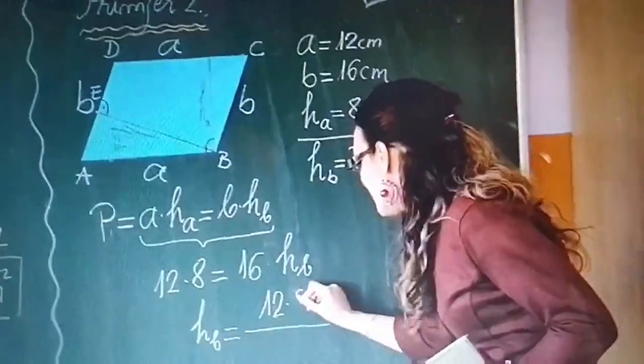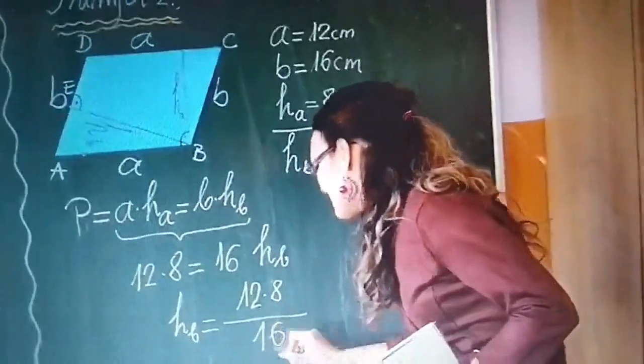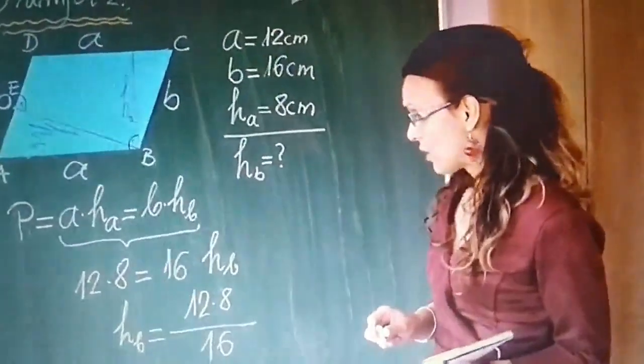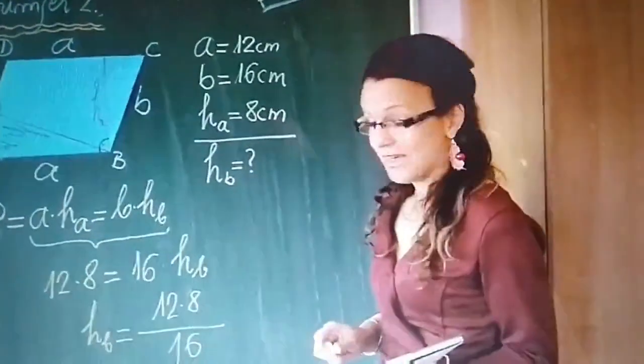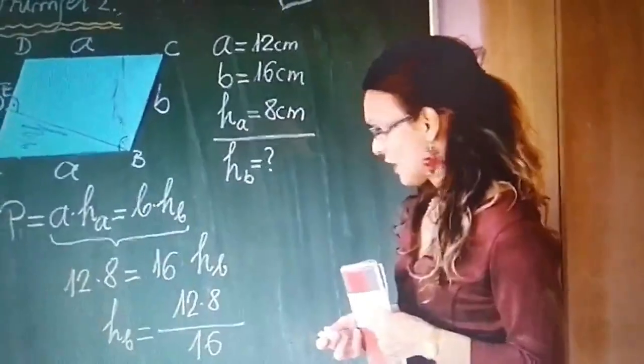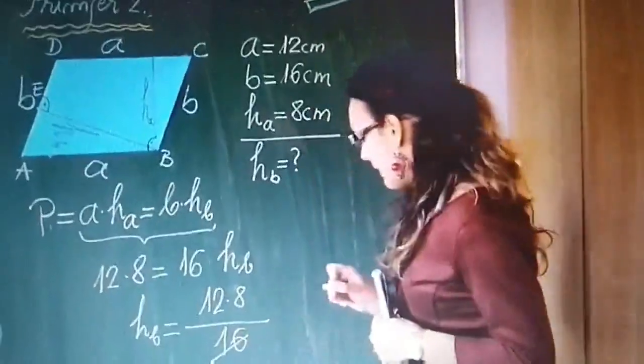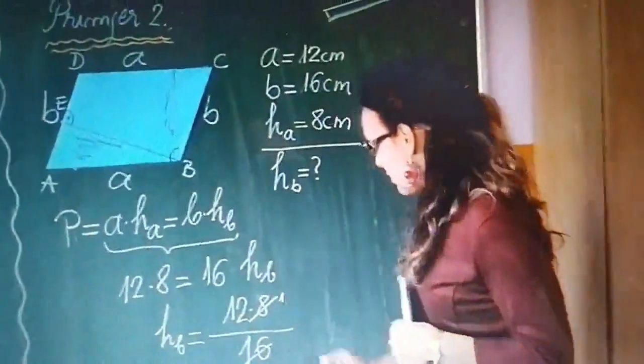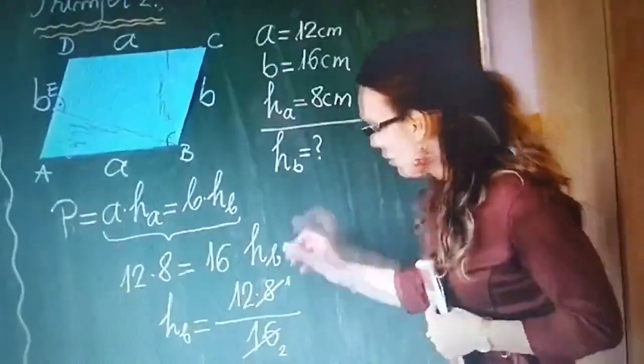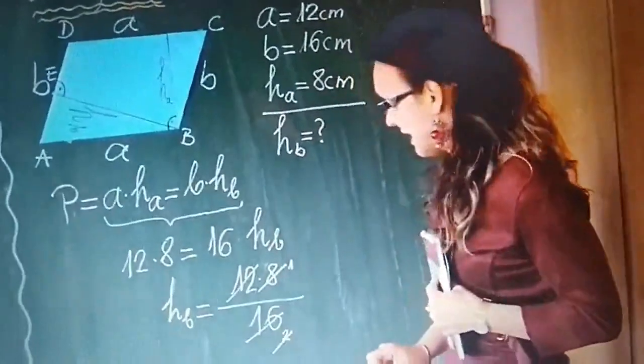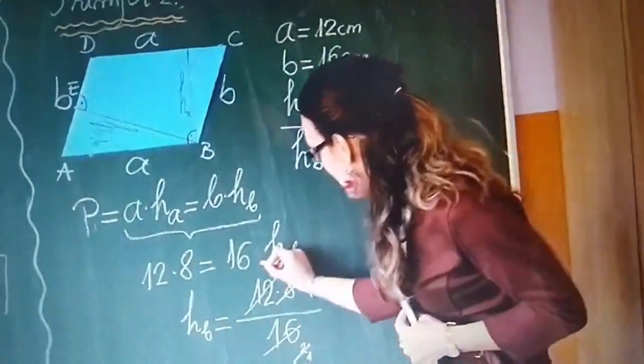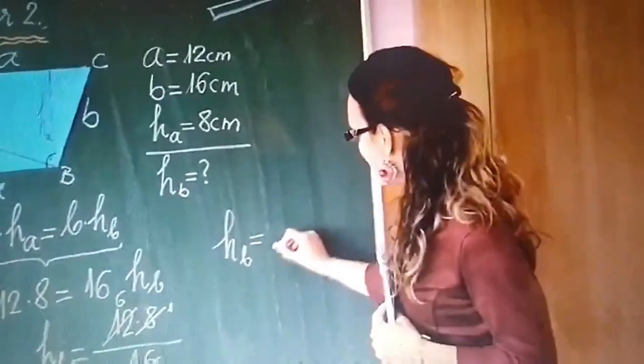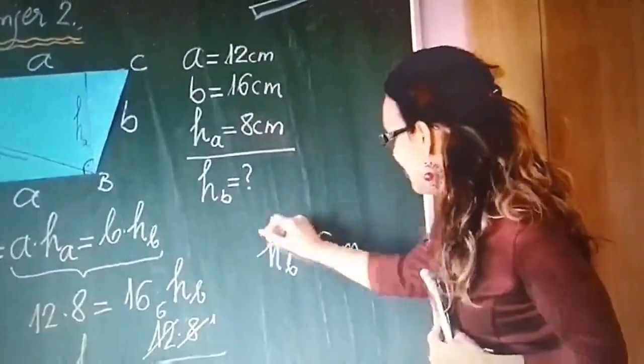Dakle, u konkretnom slučaju to će biti 12 puta 8 kroz 16. I ovdje napomenem da nisam ova dvoje pomnožila pa onda dijelila sa 16 jer je daleko lakše množiti a poslije dijeliti manje brojeve. Dakle, ostavila sam u ovom obliku i iz razloga što želimo raditi skraćivanja. Na način da ćemo primjer ovo 16 i ovo 8 skratiti sa 8. Onda će nam od skraćivanja 8 sa jedinice, onda će ostati dvojka. I onda ovo i ovo, 12 i ovo 2, skratiti sa 2. Znači tu će biti jedna jedinica, a ovdje će biti šestica. Dakle, naša visina hb ima vrijednost šest centimetara.